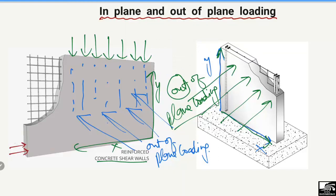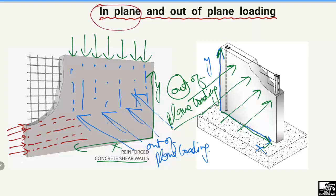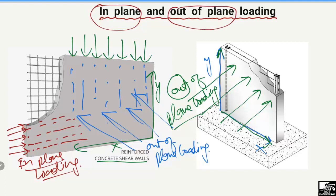For one more example, if a load acts on a member in the direction of the x-axis, that load again acts in the plane, so we call it in-plane loading. In summary: the load which acts in the plane of the member is called in-plane loading, and when the load acts out of the plane of the member it is called out-of-plane loading. Hope you guys understood — don't forget to subscribe to our channel for daily civil engineering videos. Thank you for watching.